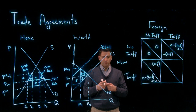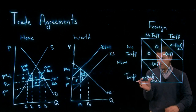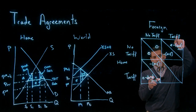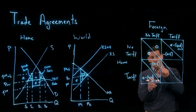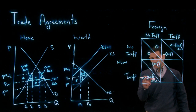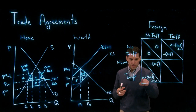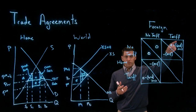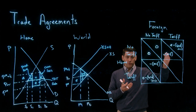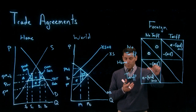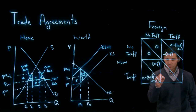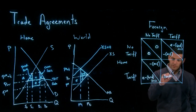What happens if both countries impose a tariff? We combine the two effects. For the home country: imposing a tariff gives them e and costs b and d, but foreign's tariff imposes losses of e and f on the home country. So home gains the terms of trade gain e, but that's wiped out when foreign imposes a tariff on home's goods — creating a terms of trade loss for home. Combining both payoffs, home ends up with minus b, d, and f.